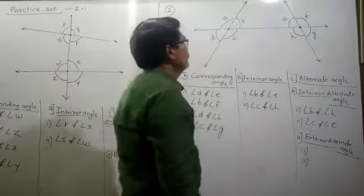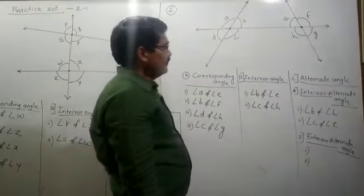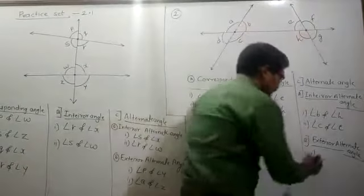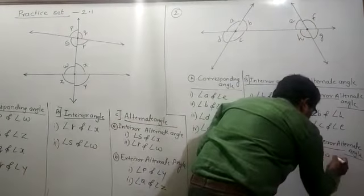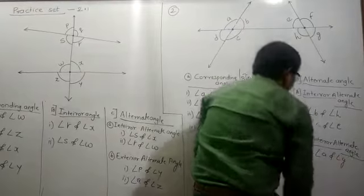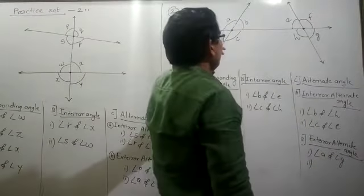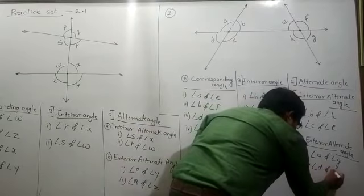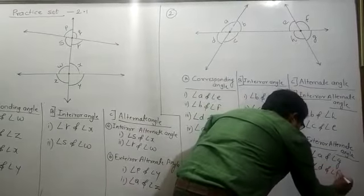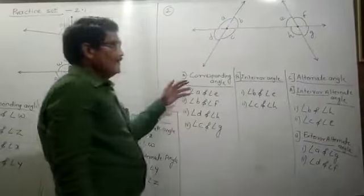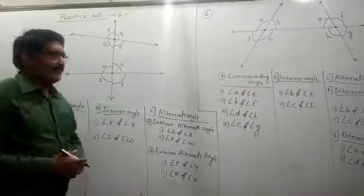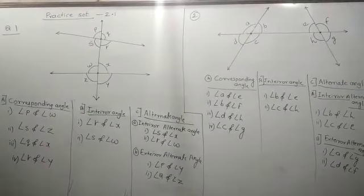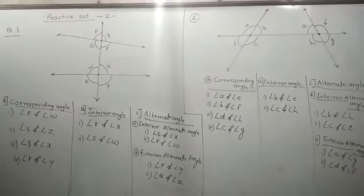For the exterior alternate angles, the pairs are angle A and angle G, and angle D and angle F. I think you understand all these things. Properly draw the diagrams, write the questions in the notebook, and complete your notebook properly. Thank you.